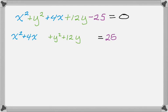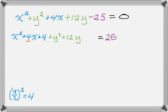Now we're going to complete the square. You check the coefficient of the squared term — if it's 1, you proceed immediately. The coefficient of x squared is 1, so I focus on the coefficient of x, which is 4. I take it, divide by 2, and square it. That gives me 4, and I add 4 to both the left side and the right side.